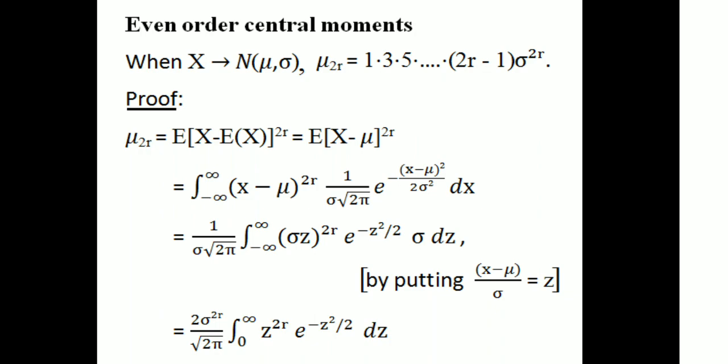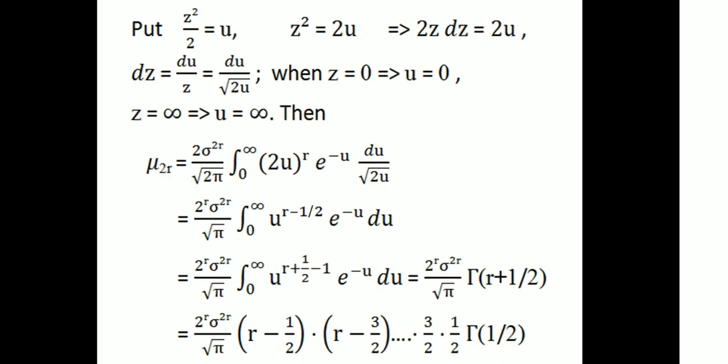We get 2σ²ʳ divided by √(2π), times the integral from 0 to infinity — because the integrand z raised to 2r times e raised to minus z²/2 is an even function, we can write it as 2 times the integral from 0 to infinity of z raised to 2r times e raised to minus z²/2 dz.